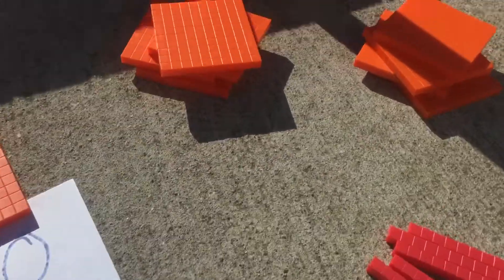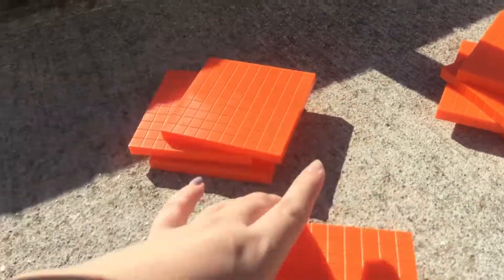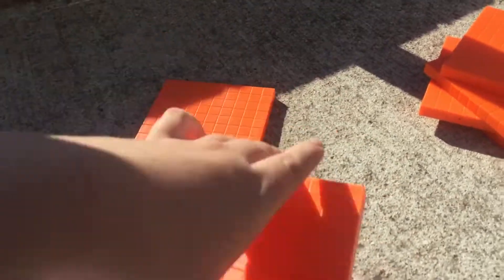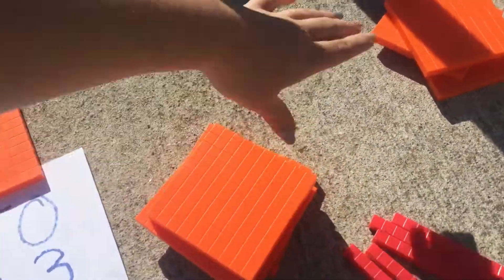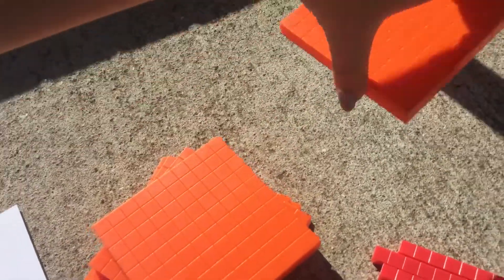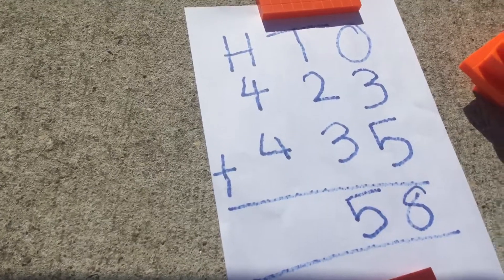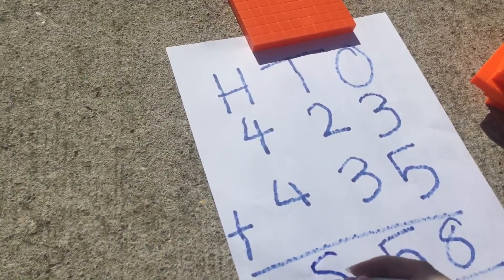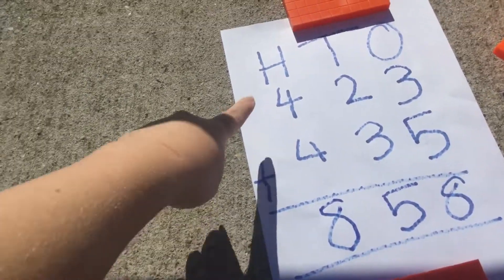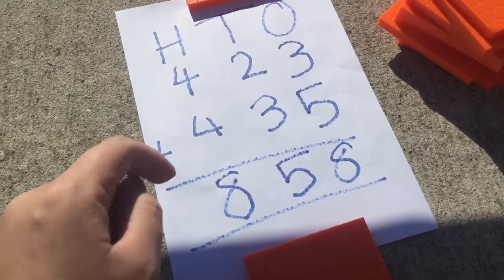My final column is the hundreds. Let's put them together. 100, 200, 300, 400, 500, 600, 700, 800. I have 8 hundreds. So I need to put 8 in the hundreds column. So I know that 400 add 400 is 800.